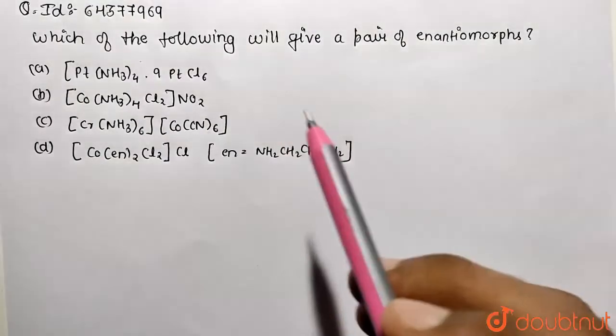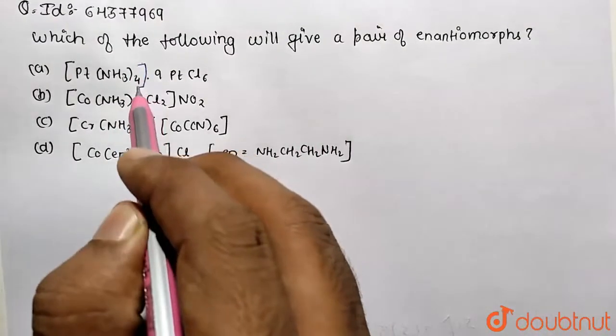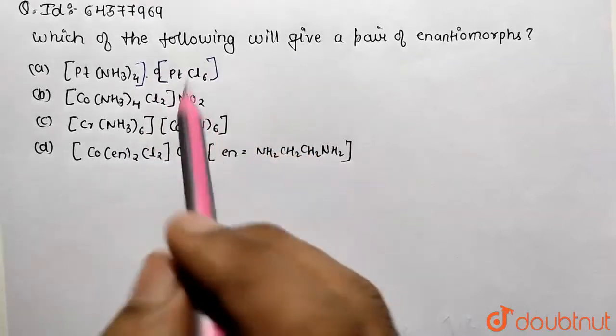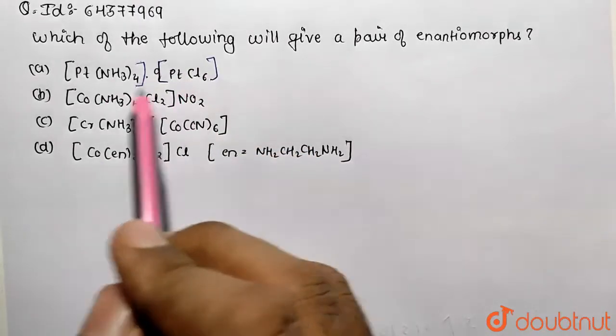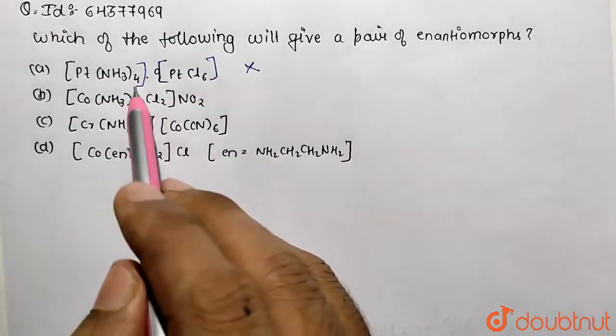So let's work up on the following. So first of all, there is correction: this is going to be this coordination sphere and this is also going to be the coordination sphere. So basically these are the coordination isomers, not the enantiomers.